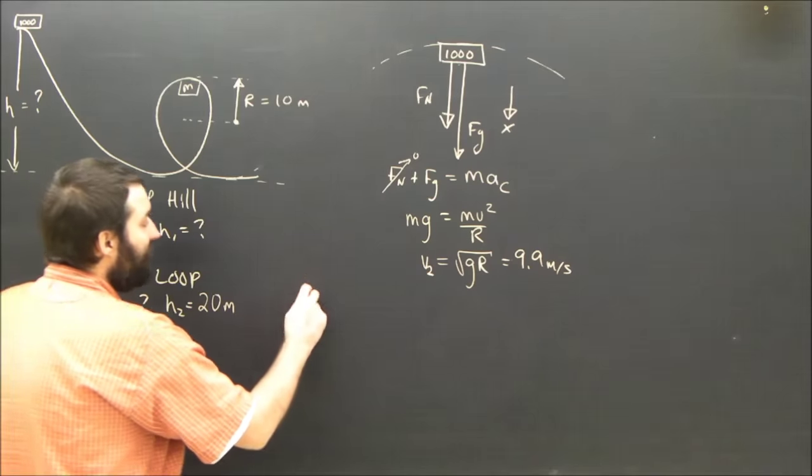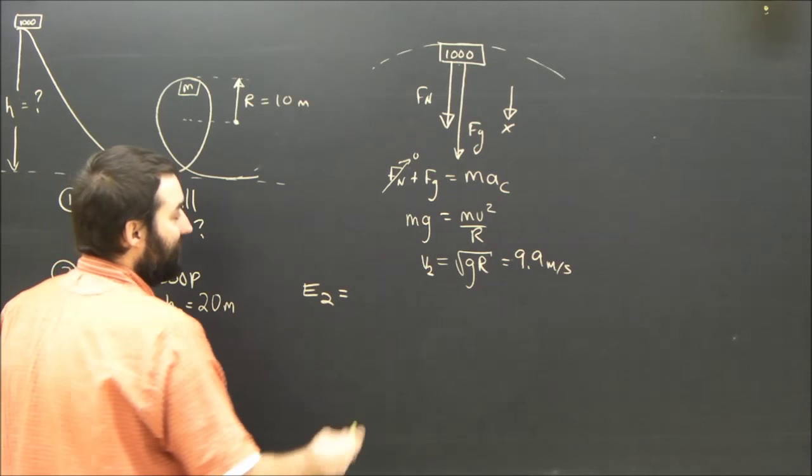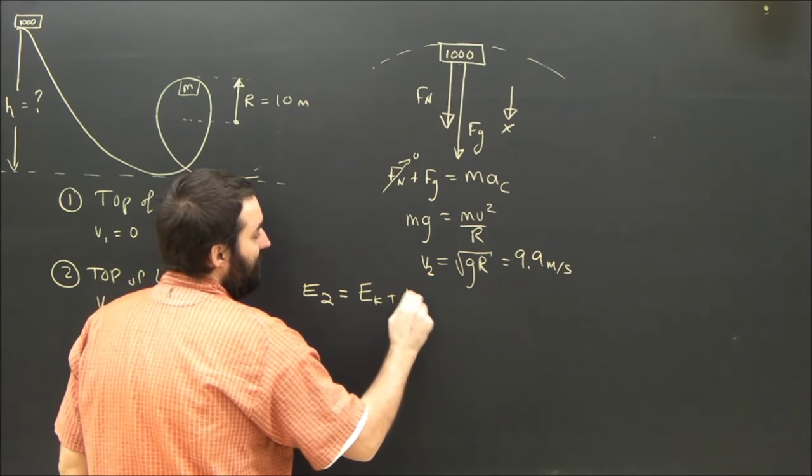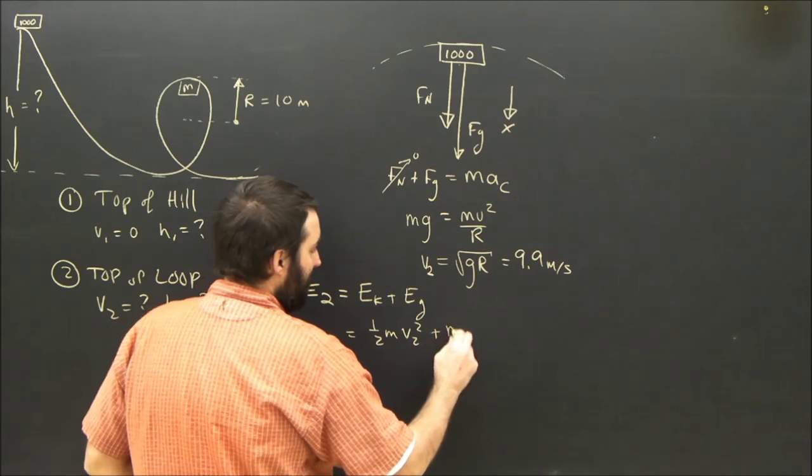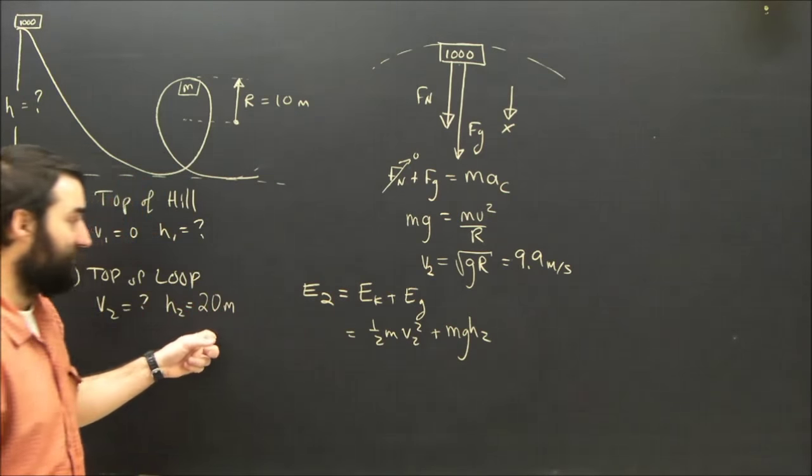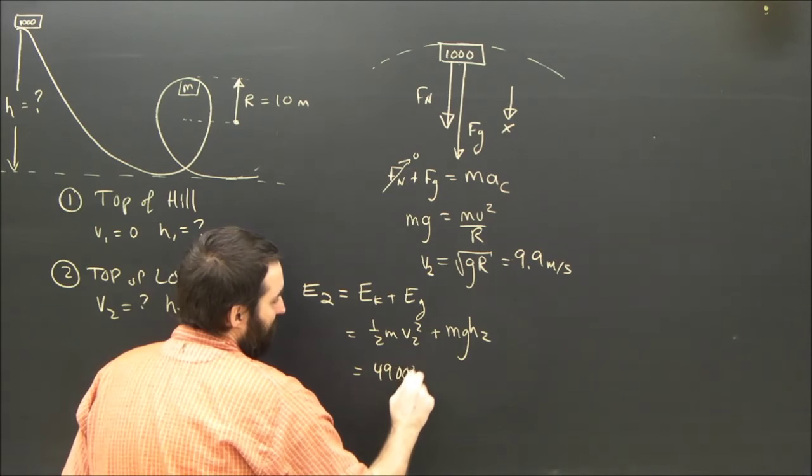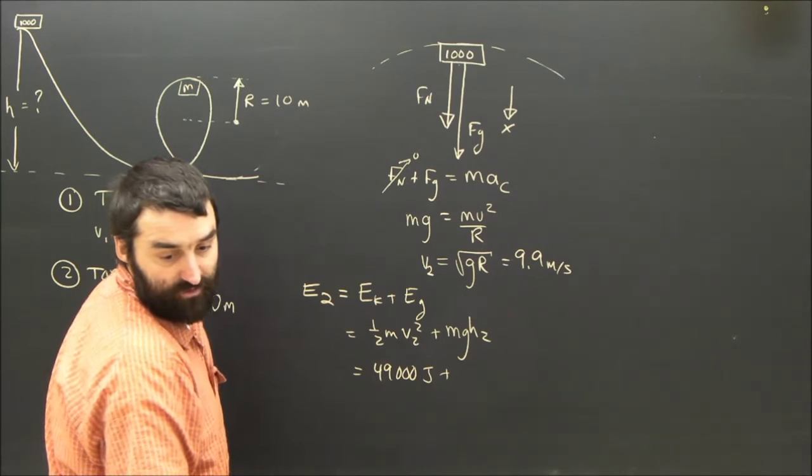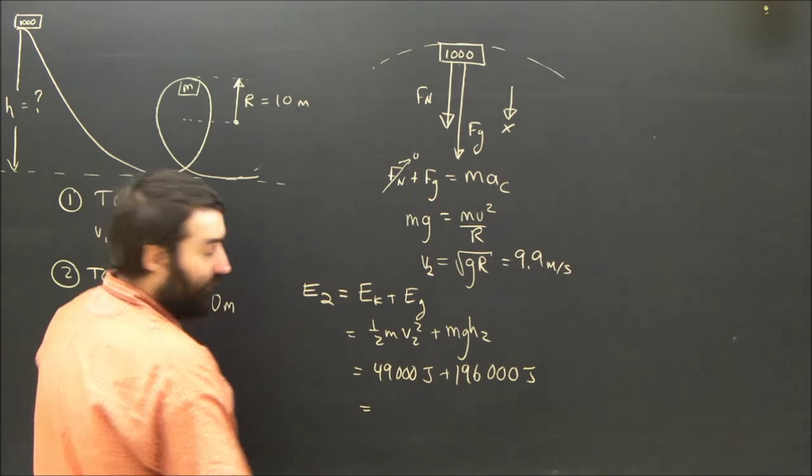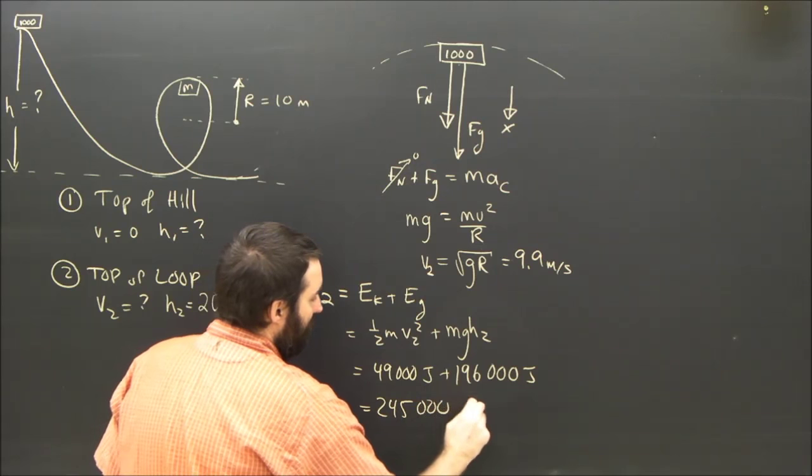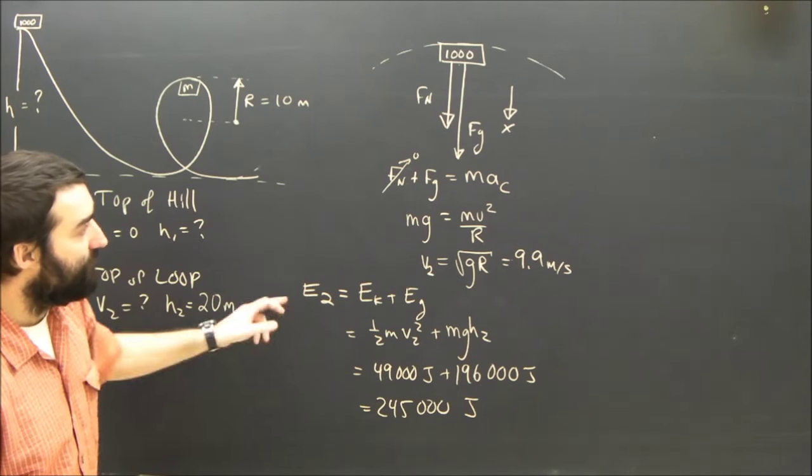Centripetal force is done. Now I'm going to look at the energy. So what is the energy at the top of the loop? What's the total mechanical energy of the roller coaster at position 2? Well, that's just the kinetic energy plus the potential energy. So that is a half mv2 squared plus mgh2, which is 20 meters. A half mv squared is 49,000 joules, and mgh2 is 196,000 joules. So adding those up, I get 245,000 joules. That's the total energy of the roller coaster at the top of the loop at position 2.